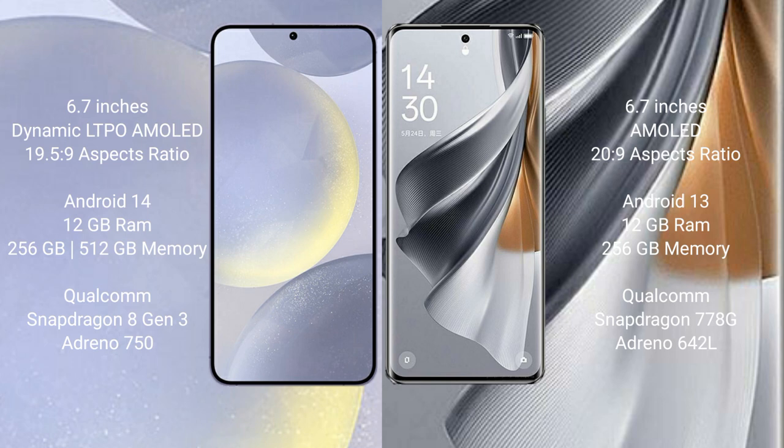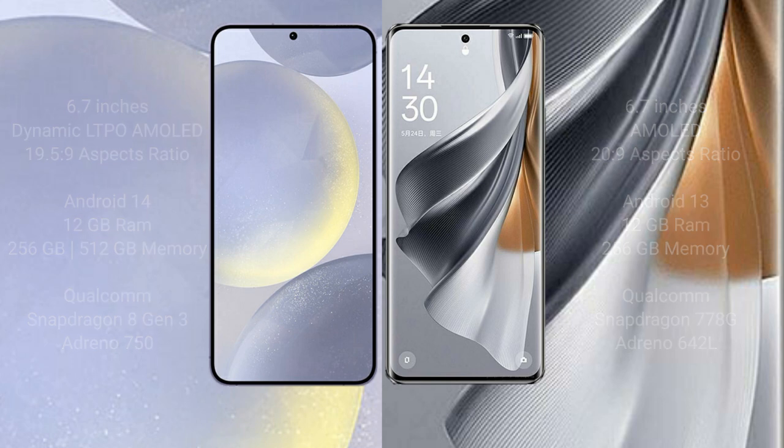Samsung Galaxy S24 Plus comes with 12GB RAM and 256GB or 512GB internal storage, Qualcomm Snapdragon 8 Gen 3 processor, and Adreno 750 GPU. OPPO Reno 10 Pro comes with 8GB or 12GB RAM and 256GB internal storage, Qualcomm Snapdragon 778G processor, and Adreno 642L GPU.